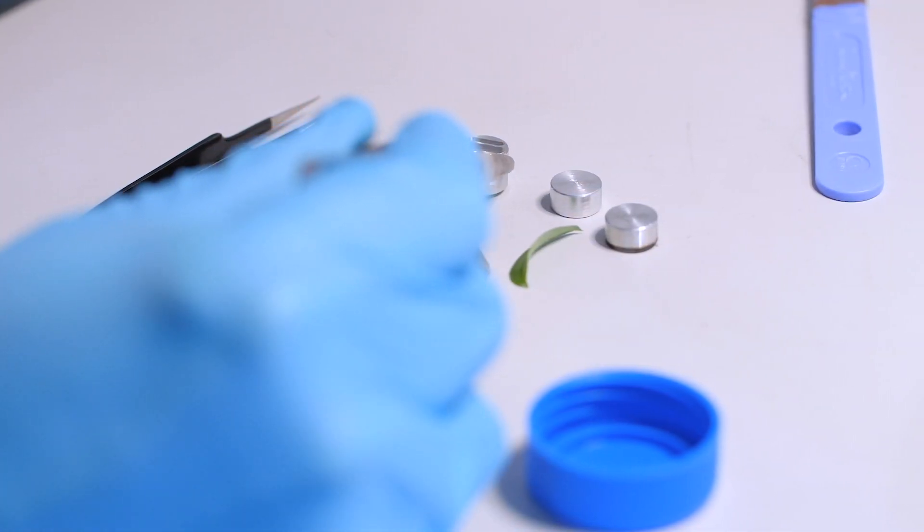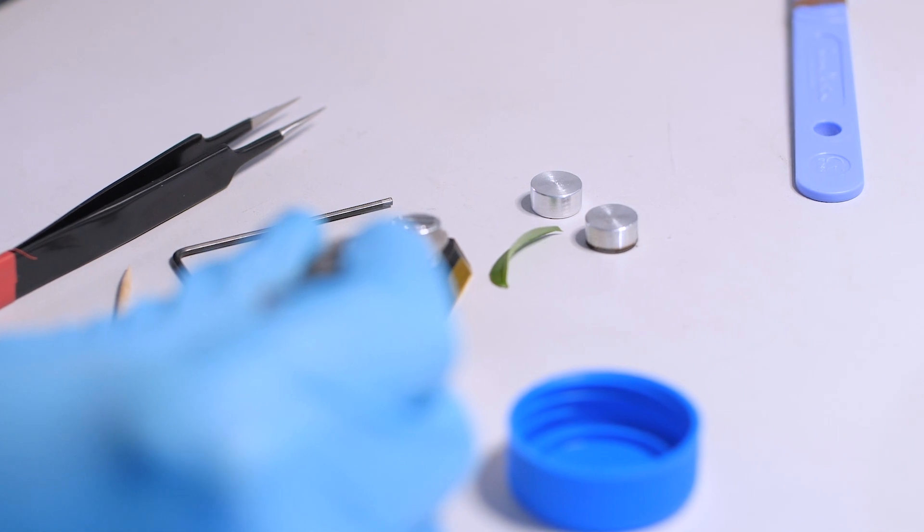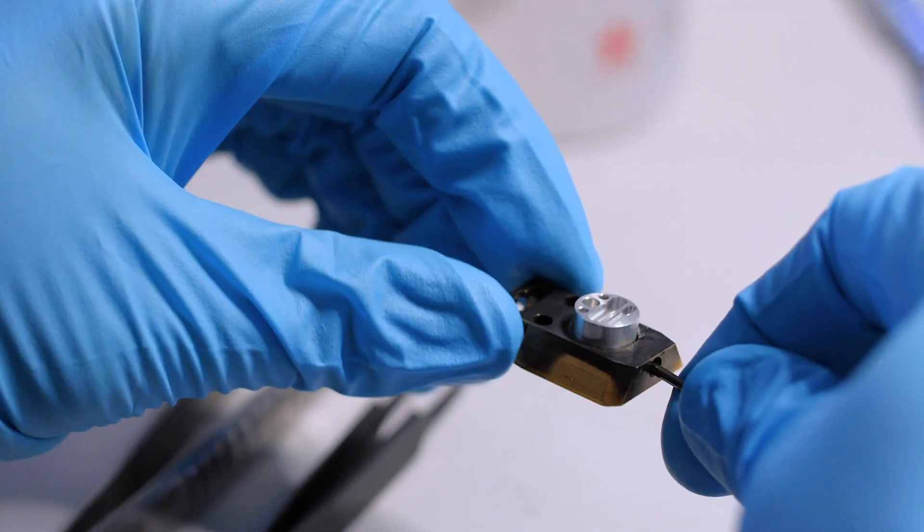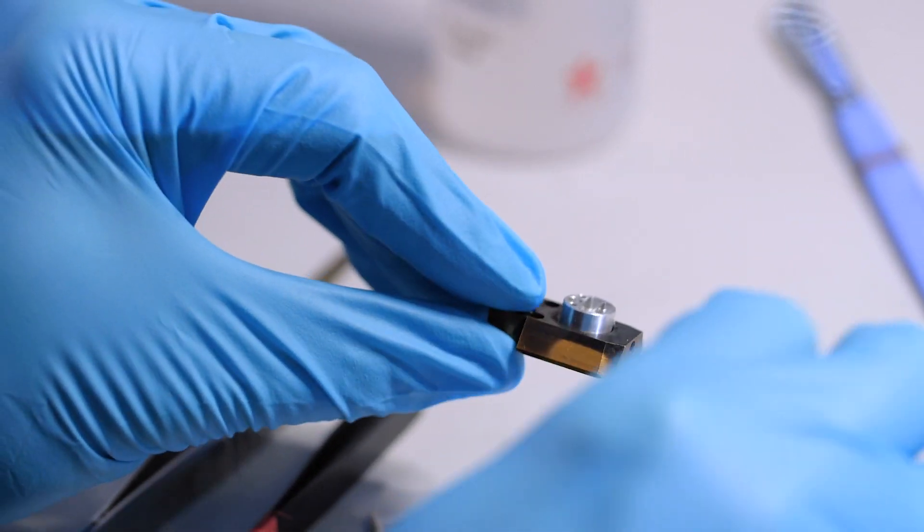First of all, he selects the stub holder he's going to use. He then inserts it into the shuttle and clamps it, making sure that it's held firmly.